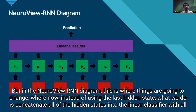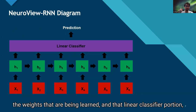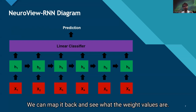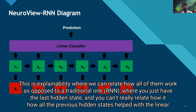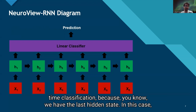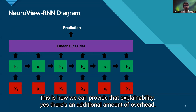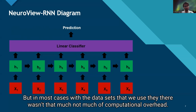In the NeuroView RNN diagram, instead of using just the last hidden state, we concatenate all of the hidden states into the linear classifier. With all the weights learned in that linear classifier portion, we can map back and see what the weight values are. This is the explainability — we can relate how all time steps contribute, as opposed to a traditional RNN where you only have the last hidden state. Yes, there is additional overhead, but in most cases with the datasets we used, there wasn't much computational overhead.